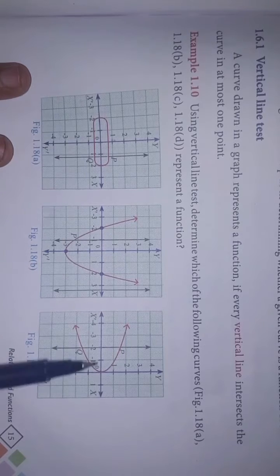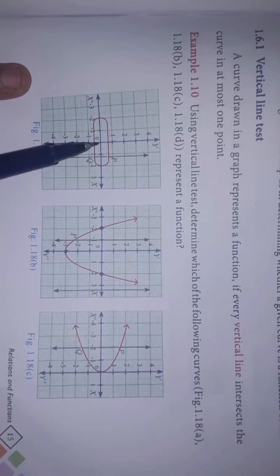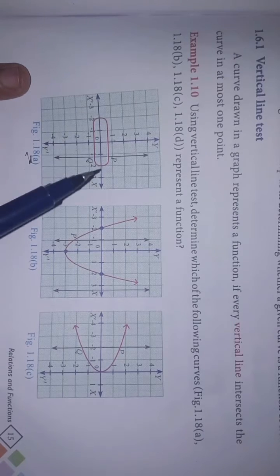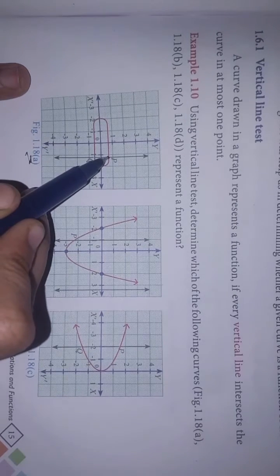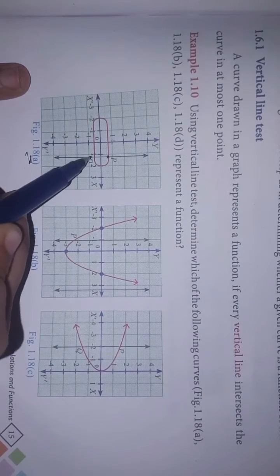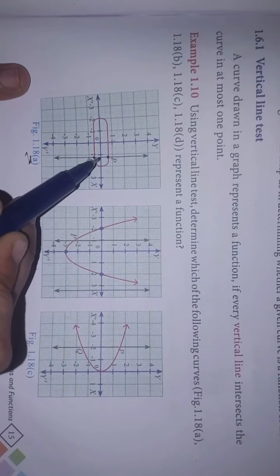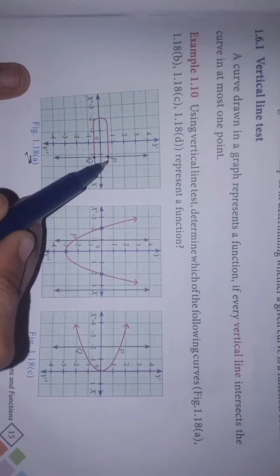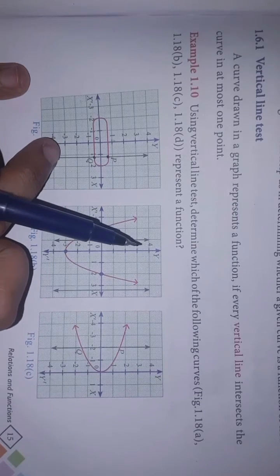Now let's check subdivision A. The curve is here. You can see points P and Q at the top — the curve meets the vertical line at more than one point. So this is not a function.